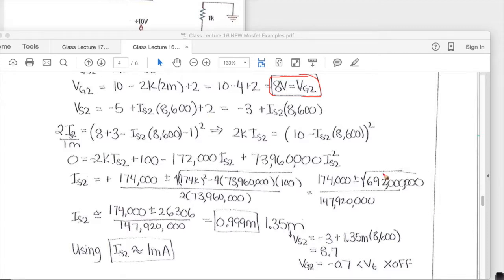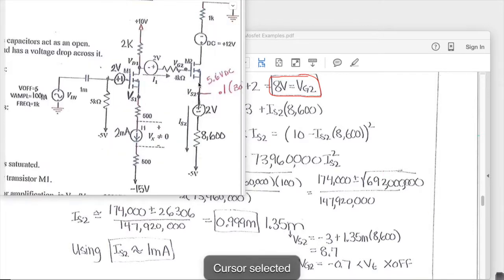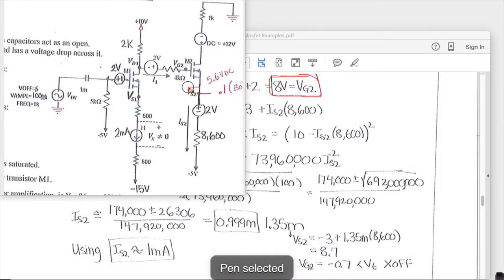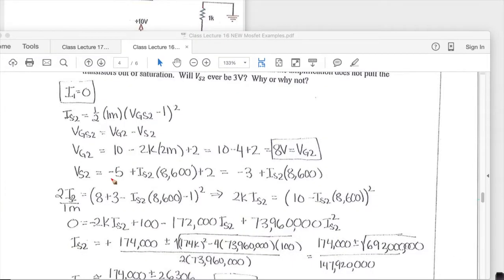Knowing VG2, we need to also find an equation for VS2 and VS2, which is here, is going to be a minus 5 and then this is plus to minus. So a plus IS2 times 8600 plus 2 is going to be our loop equation. So that again was the minus 5 plus this drop plus 2 and we get a minus 3 plus IS2, 8600.